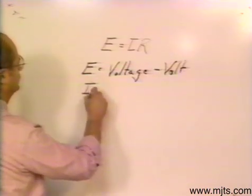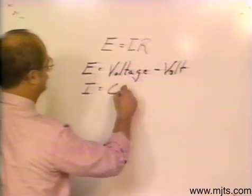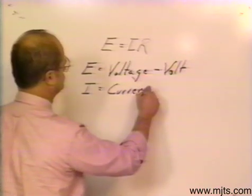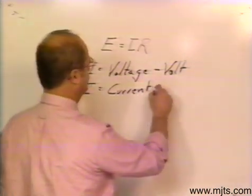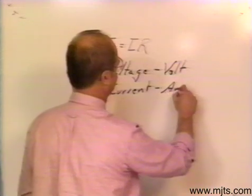I represents our current, I stands for intensity by the way, and the unit of measure is an amp.